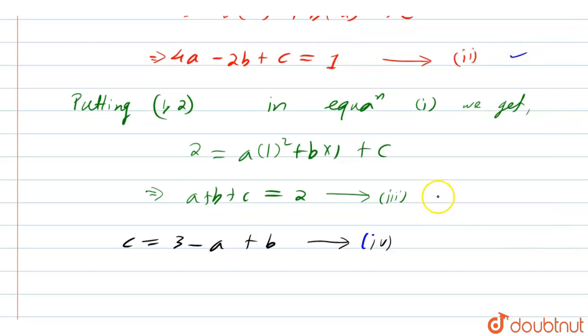Now if we solve this three equation, that is equation 2, 3 and 4, then we will get value of b equal to minus 1 by 2 and value of c equal to 10 by 3. And lastly, value of a equal to minus 5 by 6.